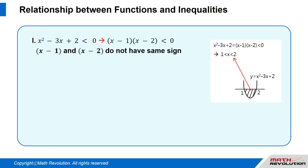Case 1: x squared minus 3x plus 2 is smaller than 0. We are looking for x squared minus 3x plus 2 is smaller than 0, which can be factorized as (x minus 1)(x minus 2) is smaller than 0.